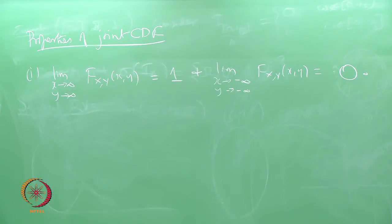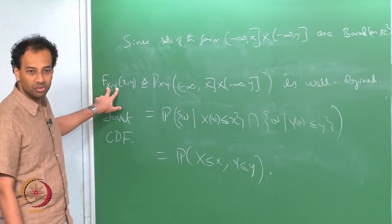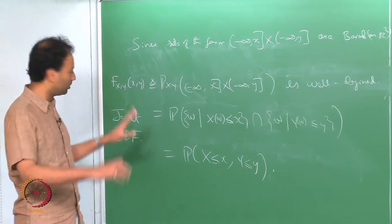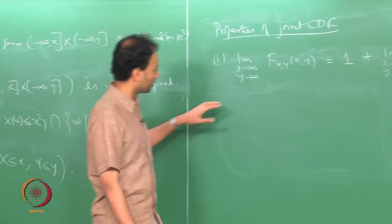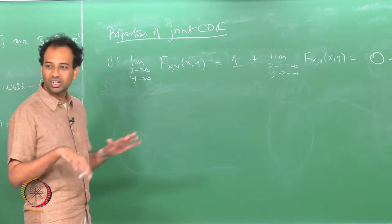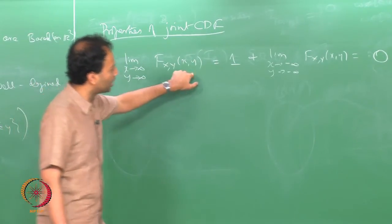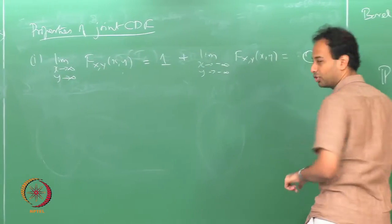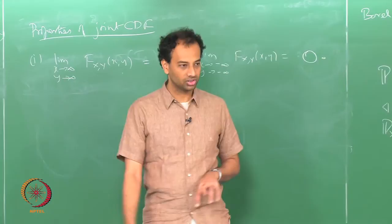Now I will state some properties of the joint CDF, most of which are along expected lines if you know the one-dimensional CDF. We use the notation F_{X,Y}(x, y) for two random variables. As you would imagine, this is a function of two variables, so you should look at the plot in 3D. When x and y both go to infinity, the joint CDF goes to 1; when both go to minus infinity, the joint CDF goes to 0.